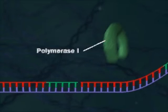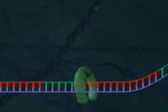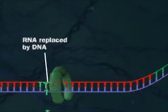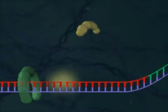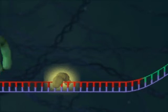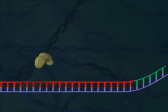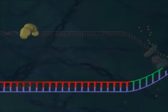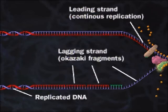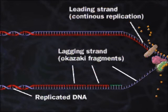DNA polymerase 1 replaces the RNA primers with DNA. Finally, DNA ligase links the Okazaki fragments.